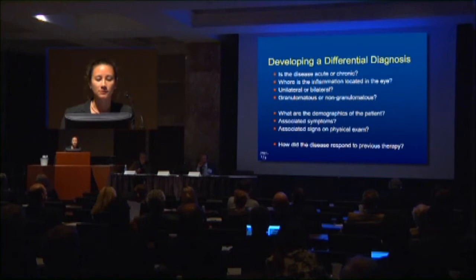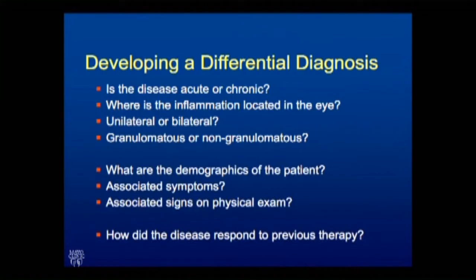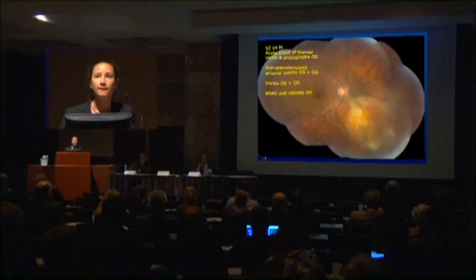When we are developing a differential diagnosis, of course we want to know if it's acute or chronic and where the inflammation is. Some people feel granulomatous classification is important, but it can start out granulomatous and become non-granulomatous and vice versa. We also want to know other things about the patient and whether or not there are any signs on physical exam.